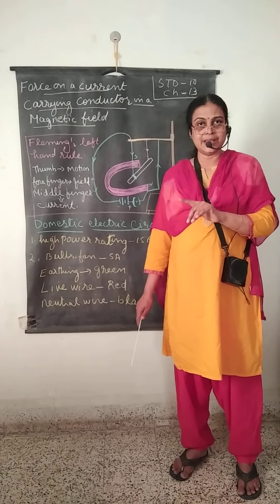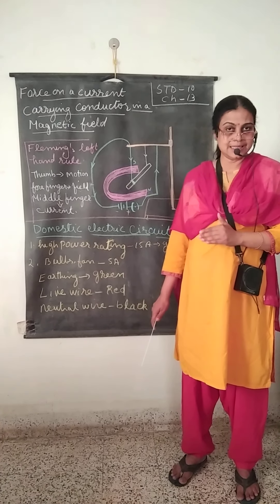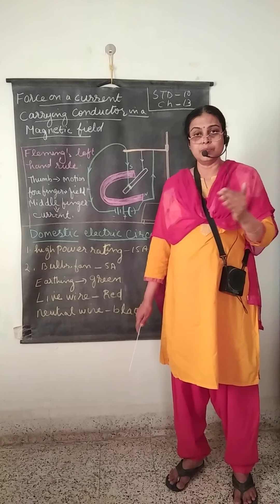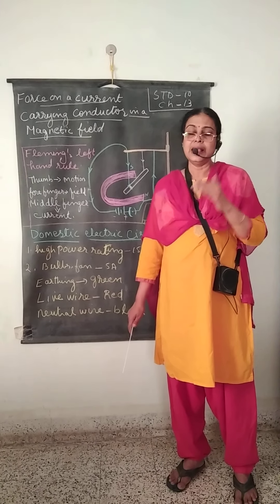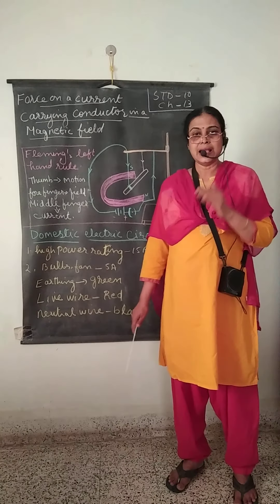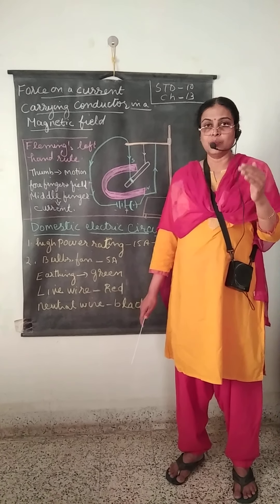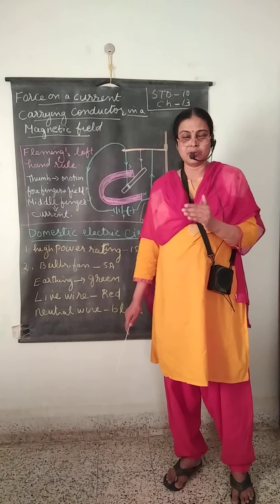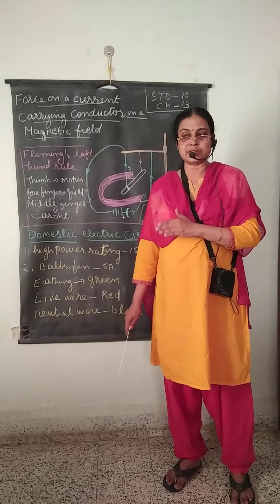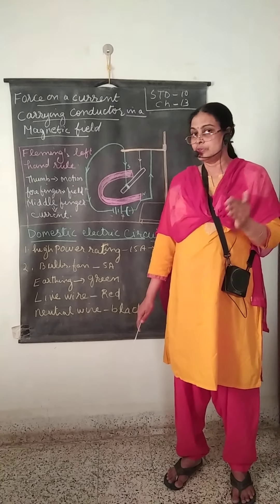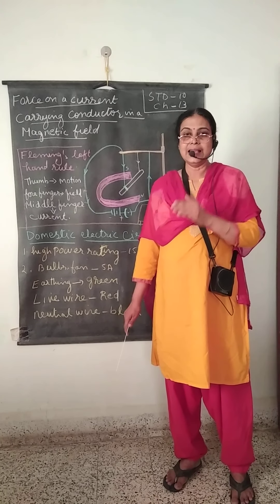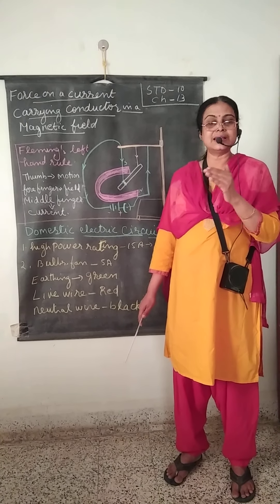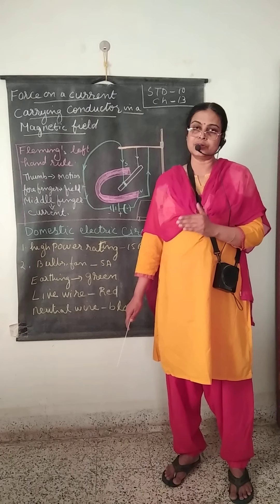Short circuit occurs when the live wire and neutral wire come in contact with each other, causing excess flow of current. The resistance becomes zero and more current flows. Overloading occurs when many appliances are connected to one socket and excess current flows. Both overloading and short circuit create trouble in appliances. To avoid this, fuse wire is used, which melts and breaks the circuit, saving the appliances and protecting the person from electric shock.